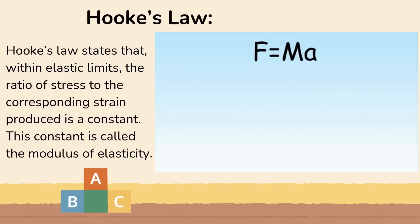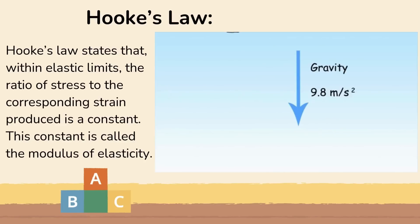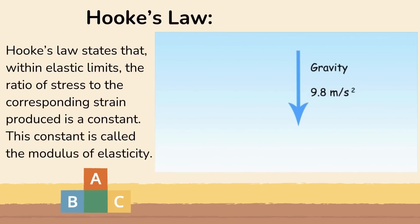F equals MA is the formula used in physics to determine the strength of a force. F stands for force and is measured in newtons. M stands for mass and is measured in kilograms. A stands for acceleration and is measured in meters per second squared. In the case of Hooke's law, acceleration will be gravity: 9.8 meters per second squared.